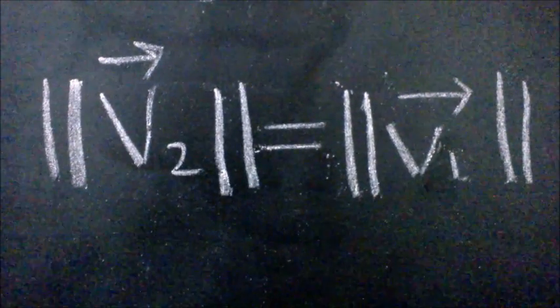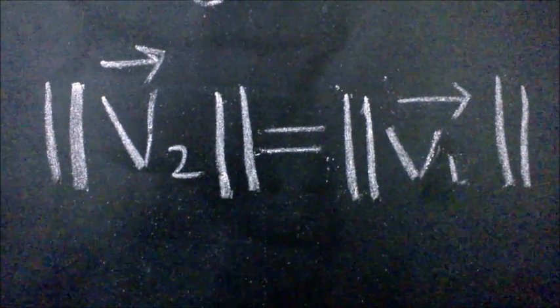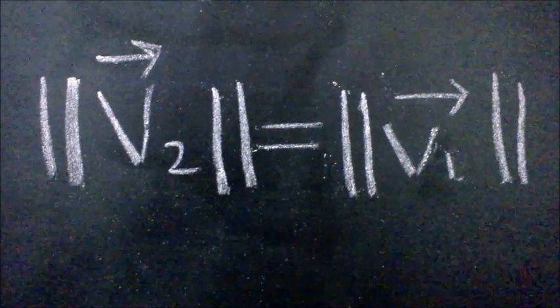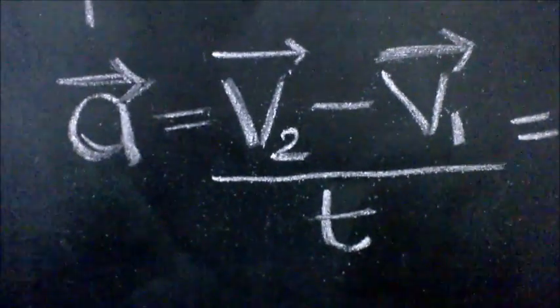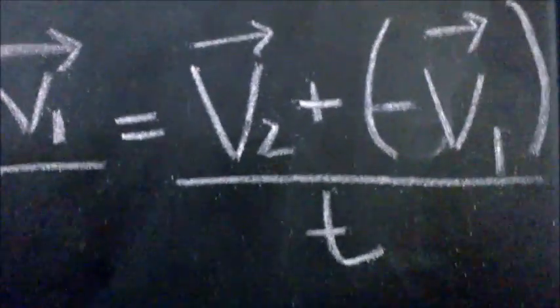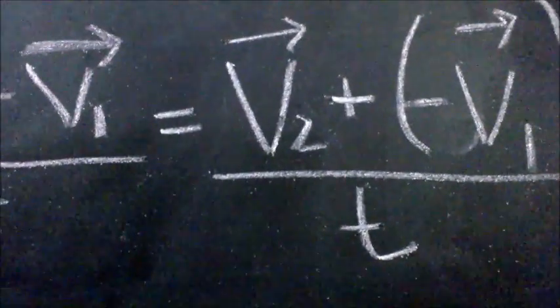Therefore, the size of the arrows will be the same but the direction in which they point will not. Acceleration is equal to v2 minus v1 upon T, which is equal to v2 plus minus v1 upon T.